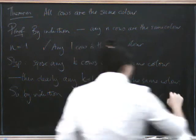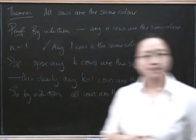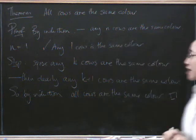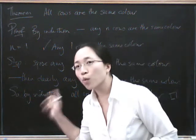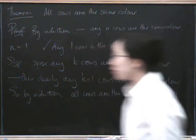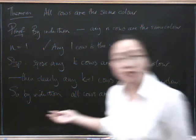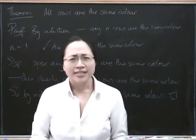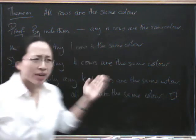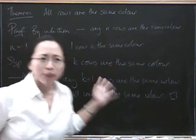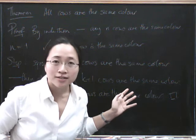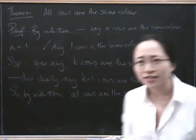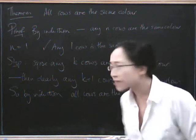Not all cows are the same color! So what is wrong with this proof? Something has to be wrong with it — clearly not all cows are the same color, and yet we appear to have proved by induction that all cows are the same color. So what's gone wrong? See if you can think about it for a second.